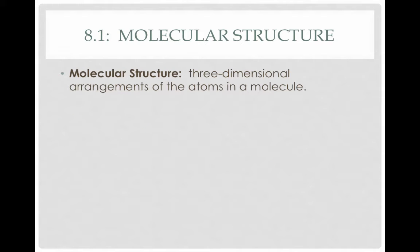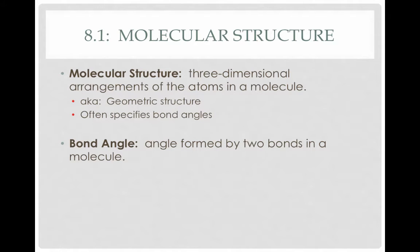Molecular structure is the three-dimensional arrangement of the atoms in a molecule. Up to this point, we've been looking at Lewis structures, which are a two-dimensional representation that don't tell us anything about three-dimensional structure. They simply tell us what's connected to what and where the electrons are. We can use Lewis structures to predict what the three-dimensional structure of a molecule will look like. This is often called the geometric structure, which specifies the bond angles between the atoms. A bond angle is the angle formed between two bonds in a molecule.